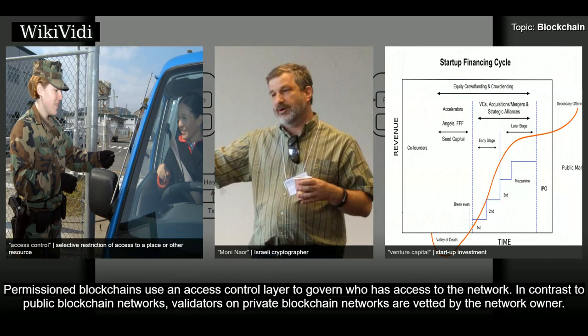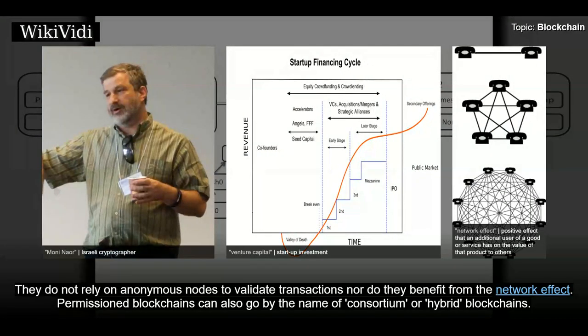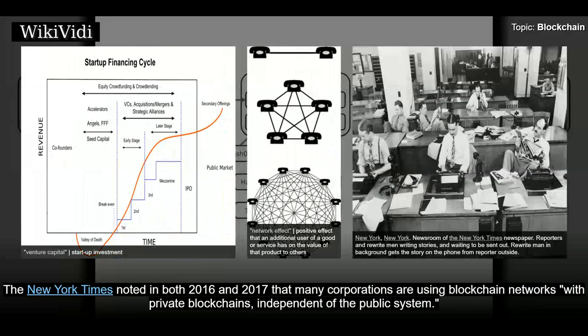Permissioned blockchains use an access control layer to govern who has access to the network. In contrast to public blockchain networks, validators on private blockchain networks are vetted by the network owner. They do not rely on anonymous nodes to validate transactions nor do they benefit from the network effect. Permissioned blockchains can also go by the name of consortium or hybrid blockchains. The New York Times noted in both 2016 and 2017 that many corporations are using blockchain networks with private blockchains, independent of the public system.